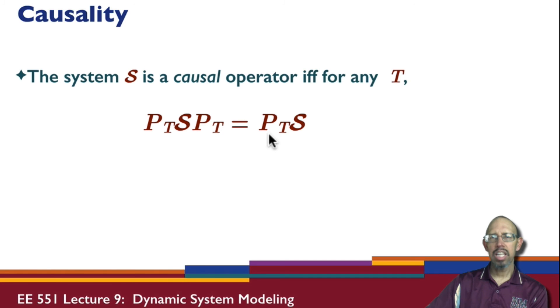So we can express causality in terms of the truncation operator. We can also express causality for a given type of system in terms of how it is expressed, and we'll look at some of those things a little bit later. This is causality, and these are system properties.